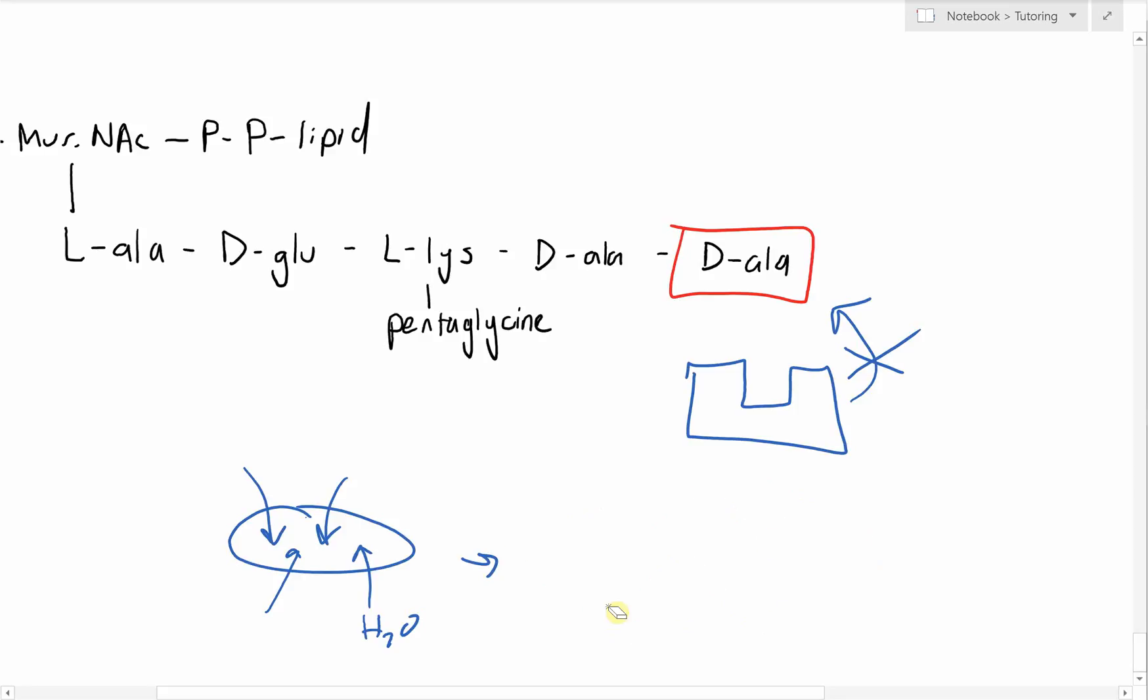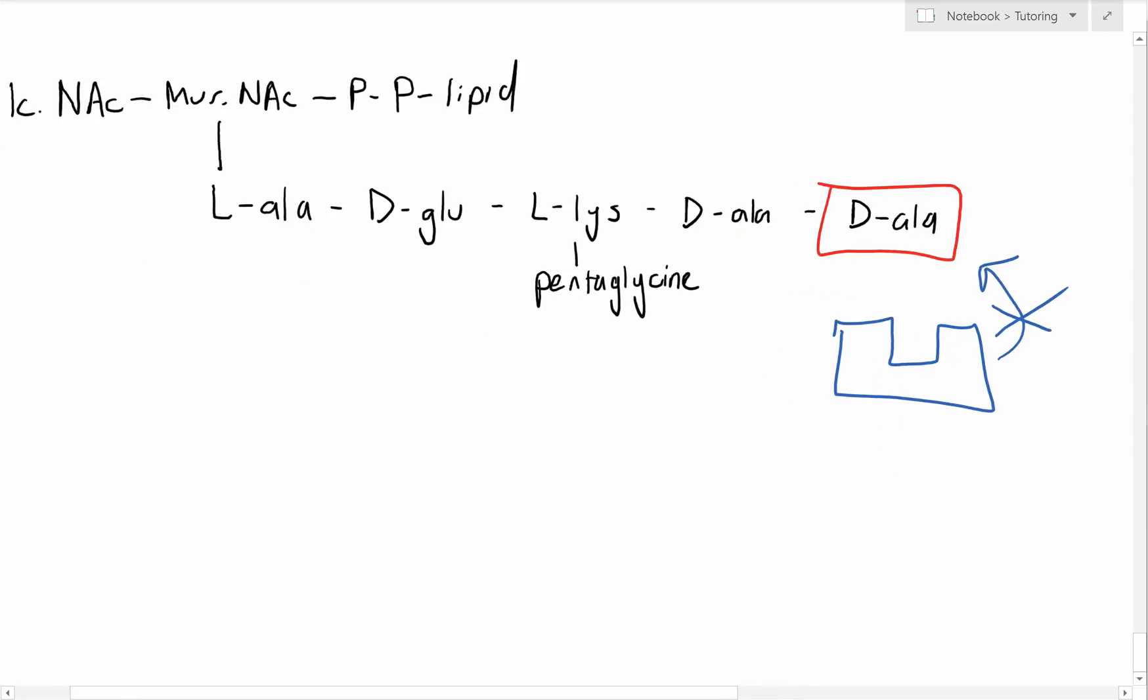Again, like beta-lactams as well, because it's bactericidal it requires active replication of the bacteria because that's when most of the peptidoglycan synthesis is actually occurring. We need to be careful about the kind of antibiotics that we mix together because if we add a bactericidal antibiotic like beta-lactams or the glycopeptides with something that's going to slow bacterial growth, it's actually going to decrease the efficacy of the vancomycin or the penicillin or the ampicillin or anything like that. I'll put another lecture, another video up about this a little bit later on.